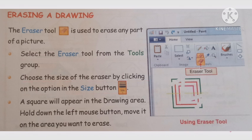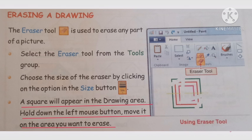When you put the eraser in the drawing area, a square will appear. Hold down the left mouse button and move it over the area you want to erase.